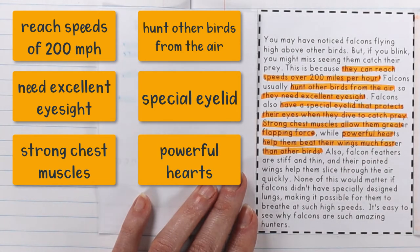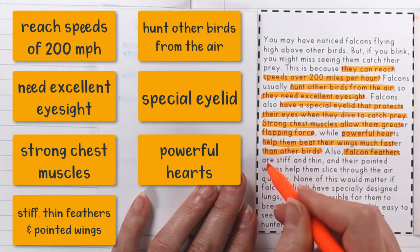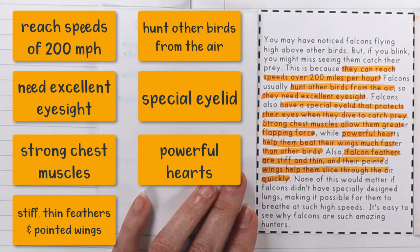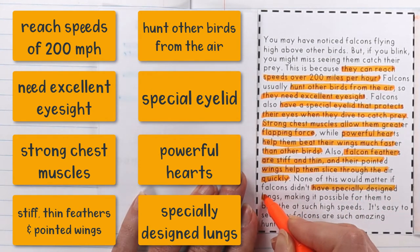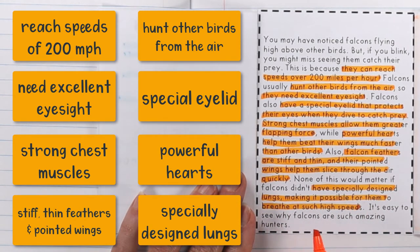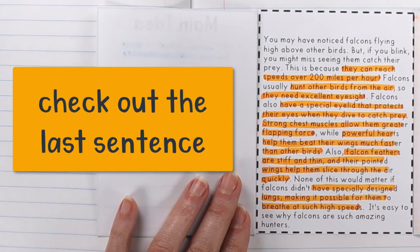Just because it's in one sentence doesn't mean you have to write down the whole sentence for a detail — you can just write down the one thought. Falcon feathers are stiff and thin and their pointed wings help them slice through the air quickly, which seems to be what's helping them build up speed. Now here's a trick: when you don't see a main idea sentence at the very beginning, sometimes the last sentence in the paragraph can give you a clue about the main idea.